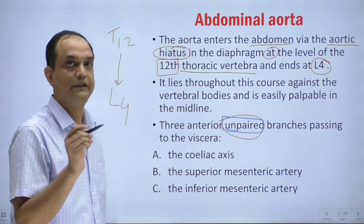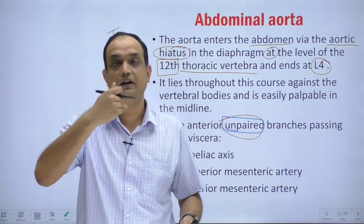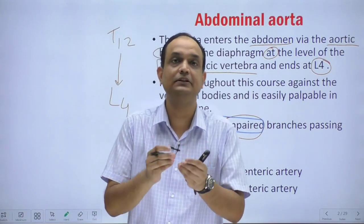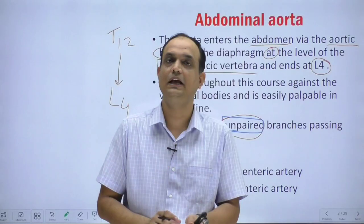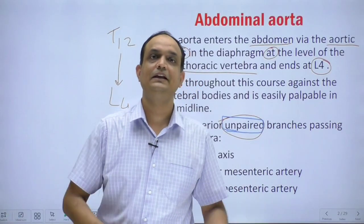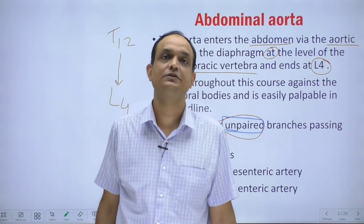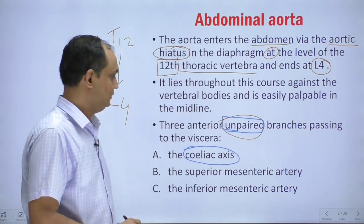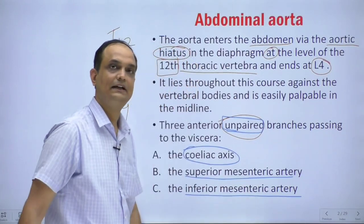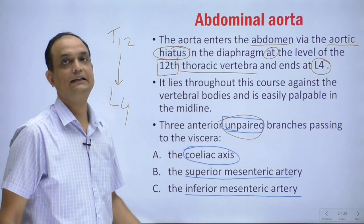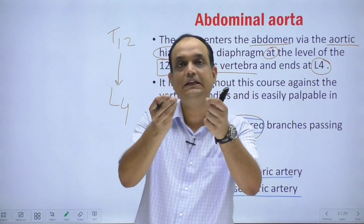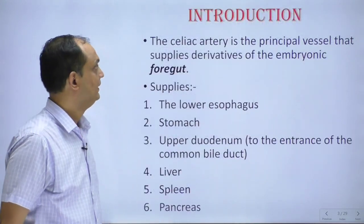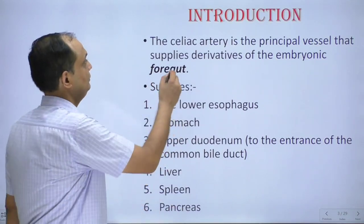The abdominal aorta has branches from its ventral surface and lateral surface. The celiac trunk is a branch arising from its anterior or ventral surface, and it is unpaired — meaning there is no right or left division. It is a single branch present in the midline coming from the anterior aspect of the abdominal aorta. The three unpaired arteries of the abdominal aorta are: the celiac trunk, the superior mesenteric artery, and the inferior mesenteric artery.